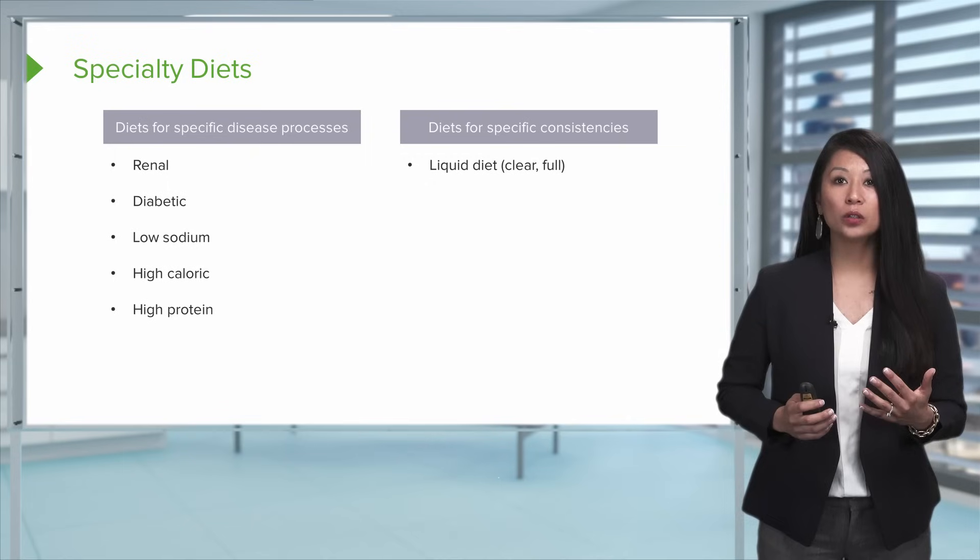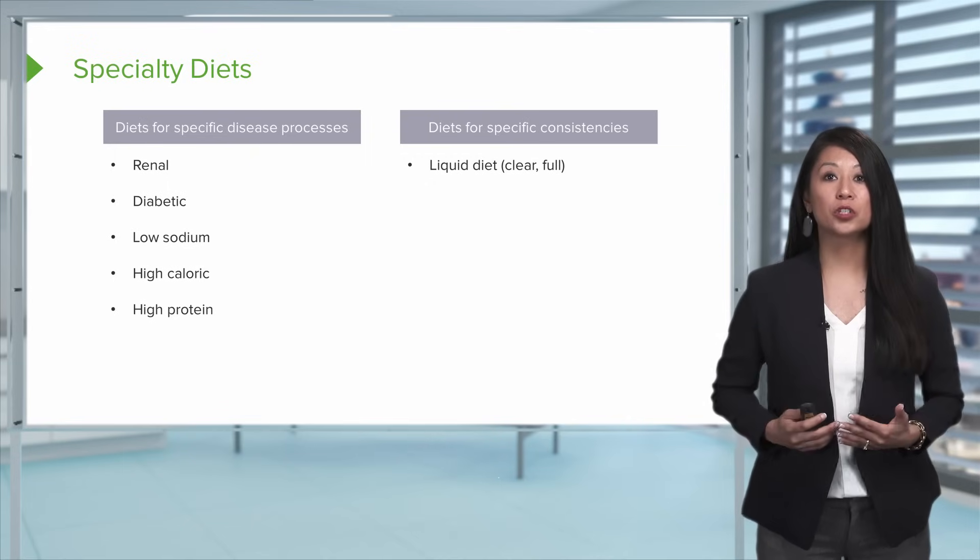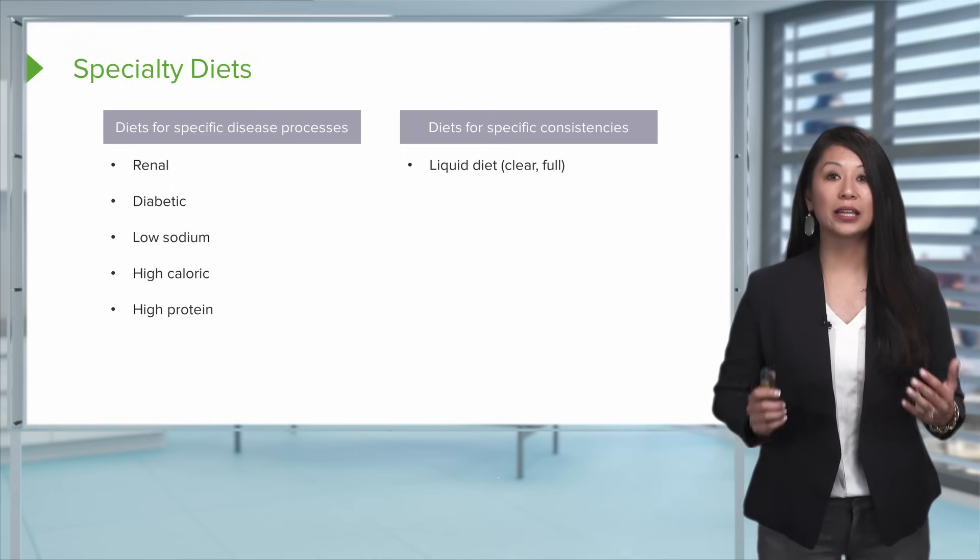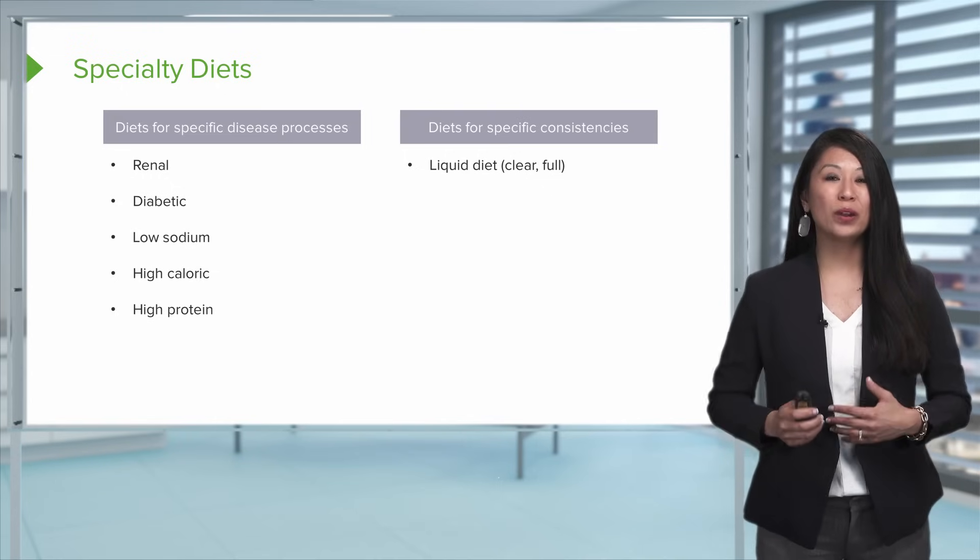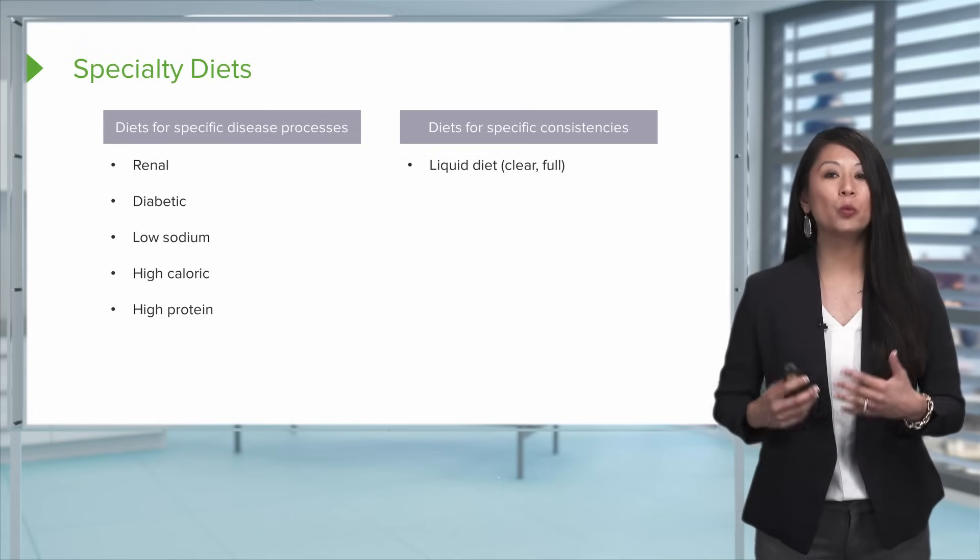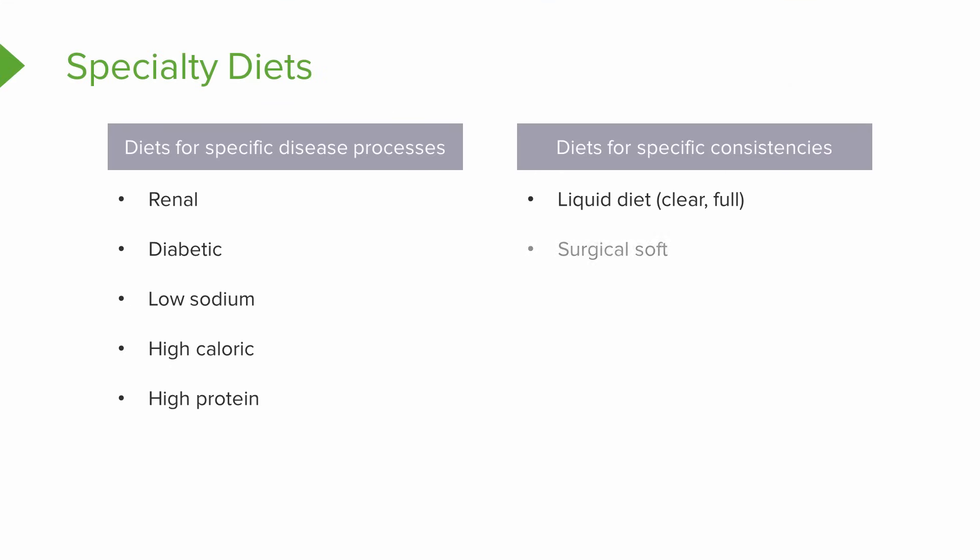Due to swallowing difficulties or maybe the patient's preparing for surgery, there are certain diets for specific consistencies, such as a liquid diet, which also, if the patient has any inflammatory bowel issues, we may use that type of diet. There's surgical soft diets, mixed consistencies. Sometimes we may need to grind up the patient's food for swallowing or even chop up the food. And of course, there's a regular consistency diet.